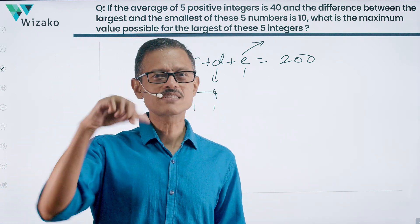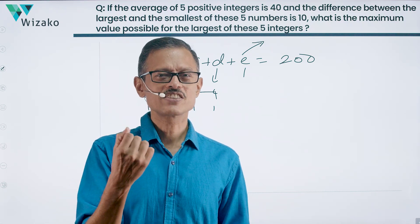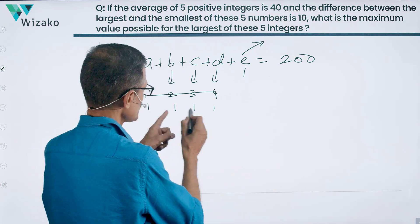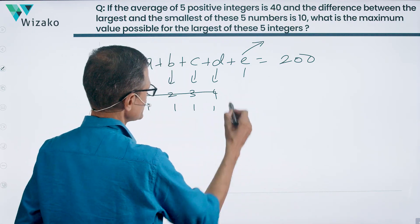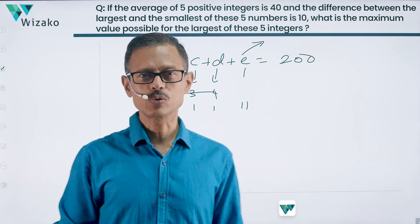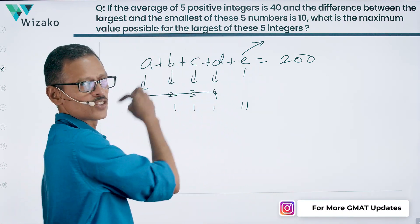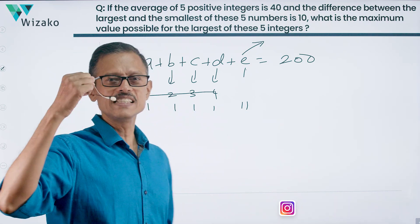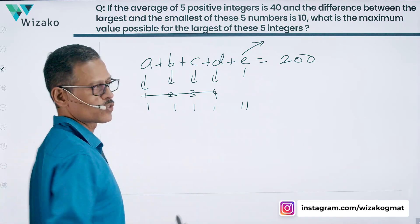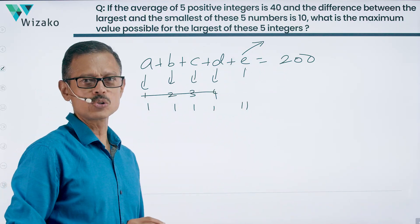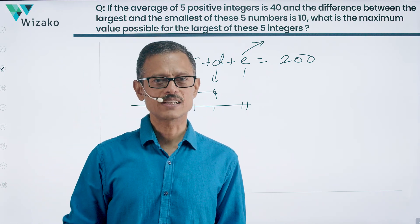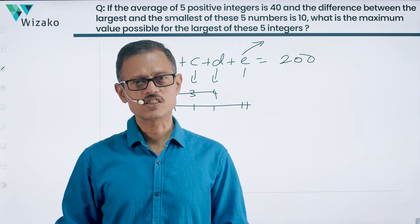If A equals 1, then E must be 11. The sum would be 1 plus 1 plus 1 plus 1 plus 11, which is 15 — but it should be 200. So simply setting A to 1 doesn't work here. Because E is A plus 10, these two numbers must be simultaneously maximized. So what we should actually minimize is B, C, and D.